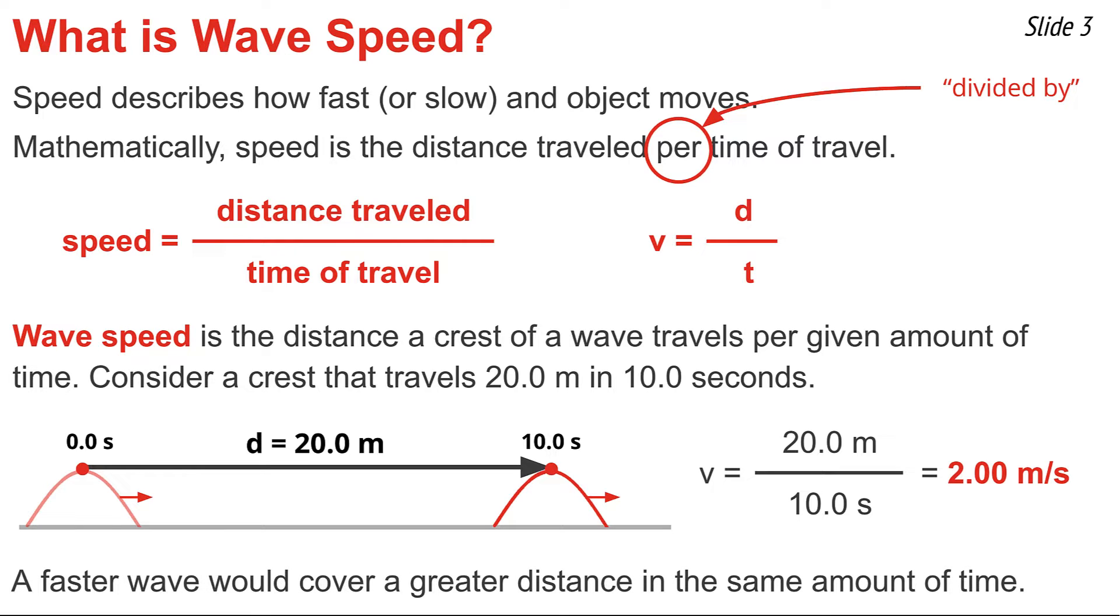And of course, if the wave was traveling faster, say 3 meters per second, instead of 2 meters per second, it would travel a greater distance of 30 meters in the same amount of time of 10 seconds.